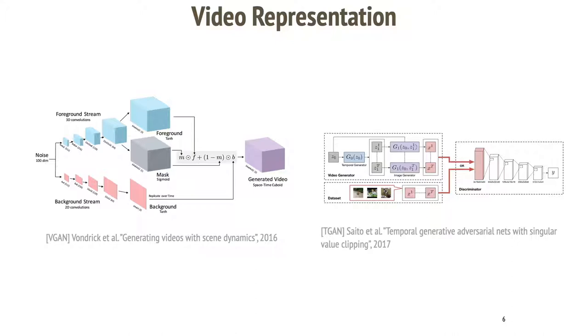Another notable work is TGAN or temporal GAN. It uses a global latent to generate a sequence of latent codes for each frame and generates each frame using an image-based generator.